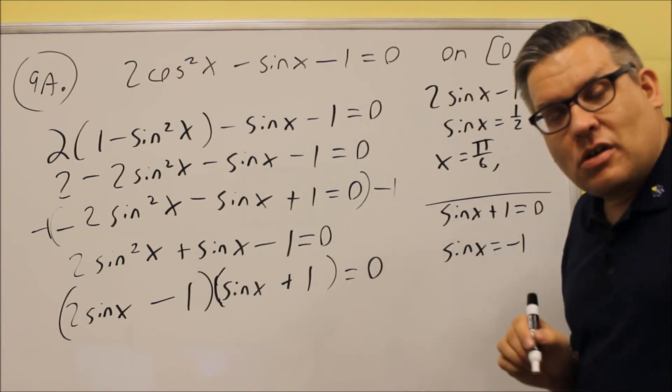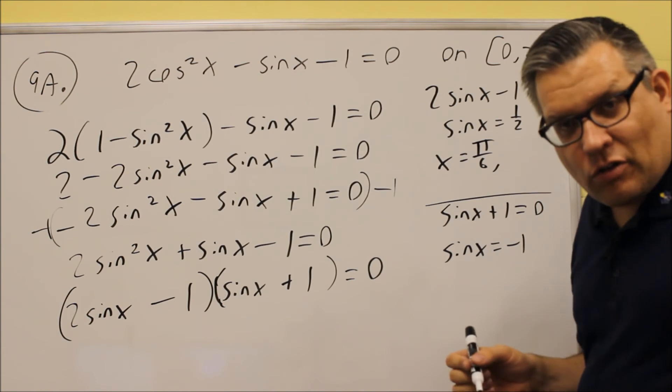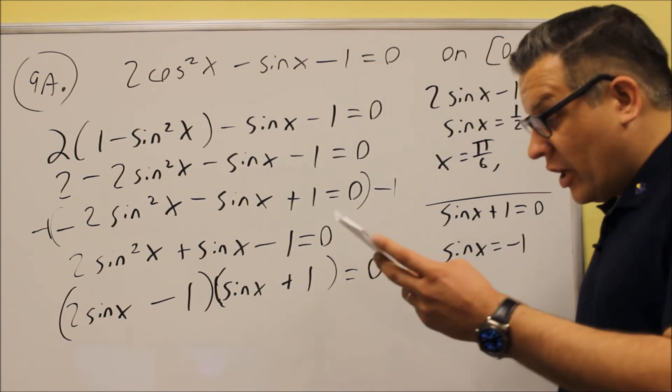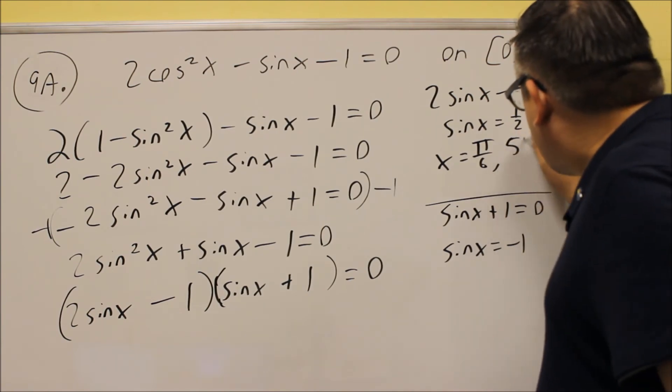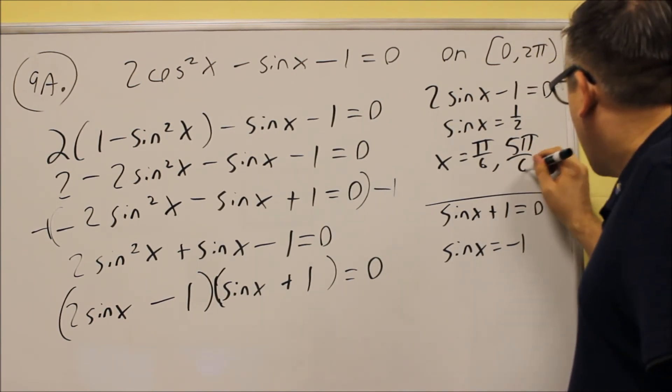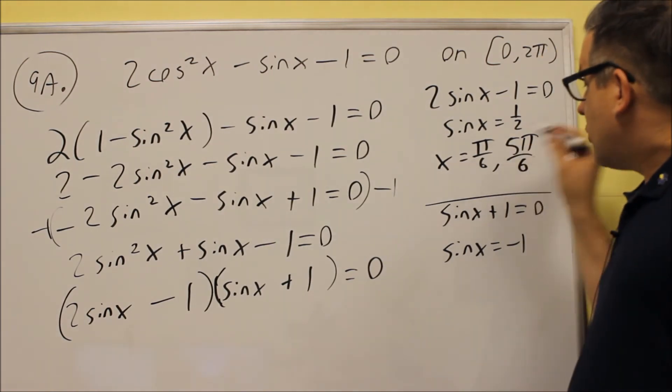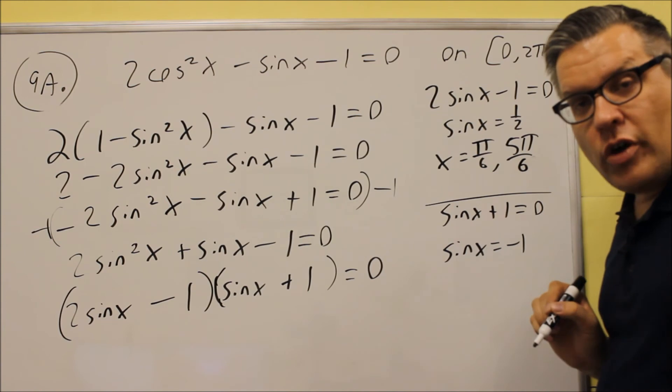And the other one is going to be in the second quadrant, and that's going to be at 150 degrees. And so if we write that one down, we'll get 5 pi over 6 for that other one. So pi over 6 and 5 pi over 6, those will be your two answers for the first equation.